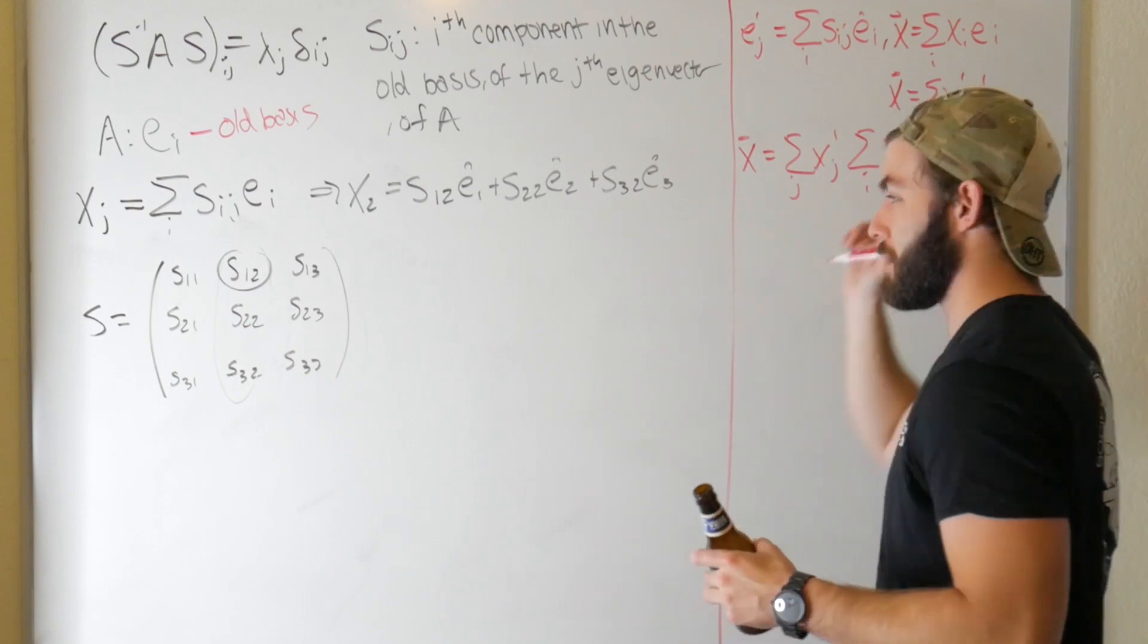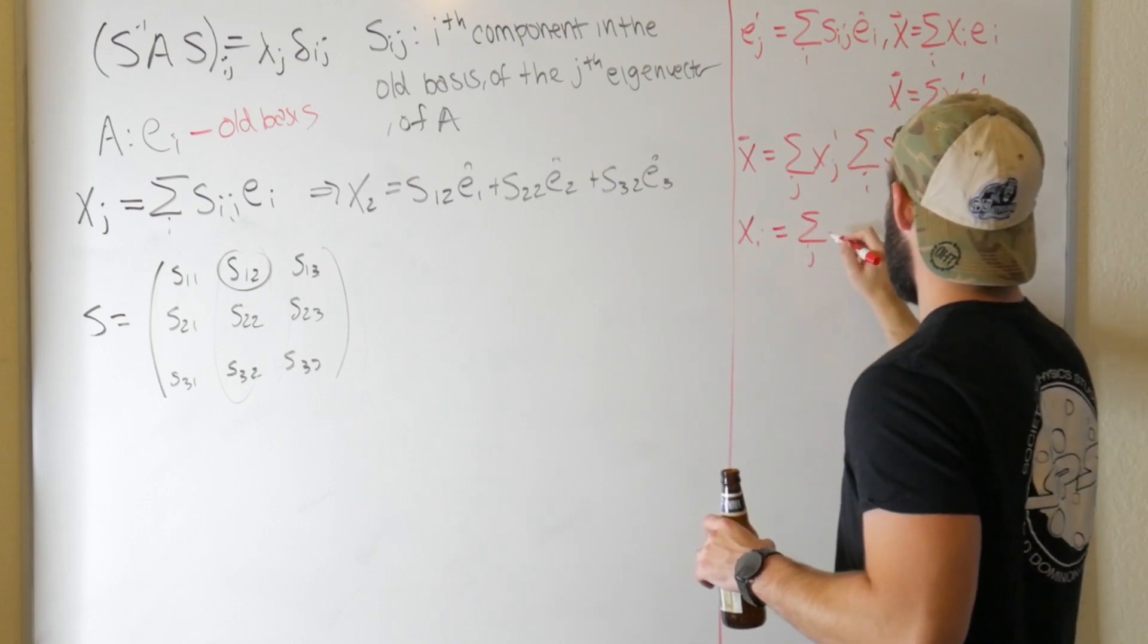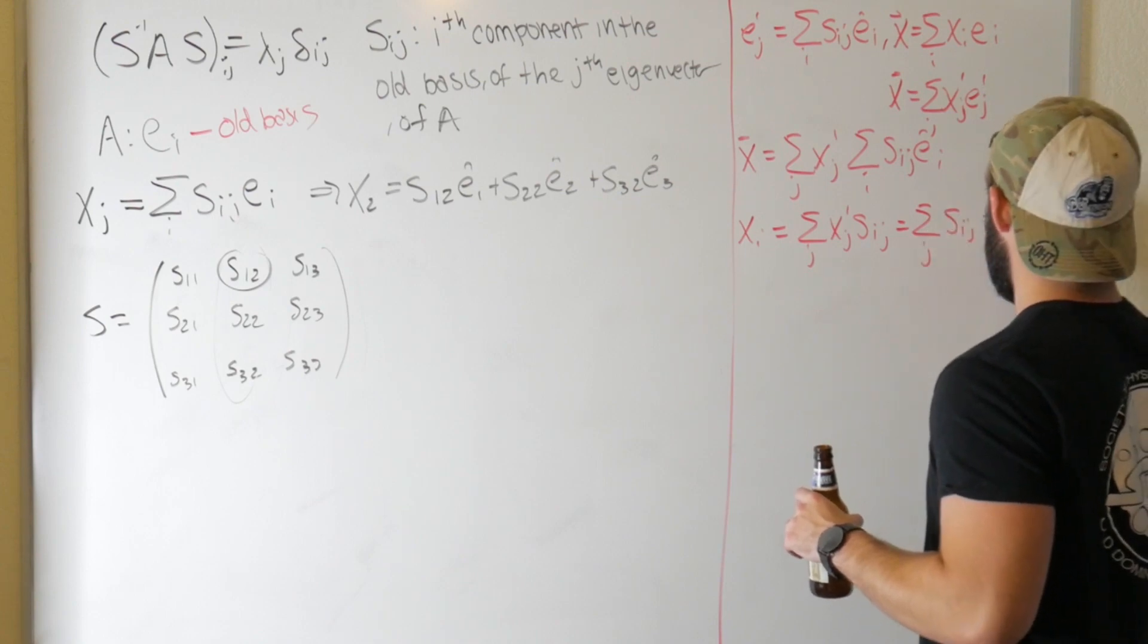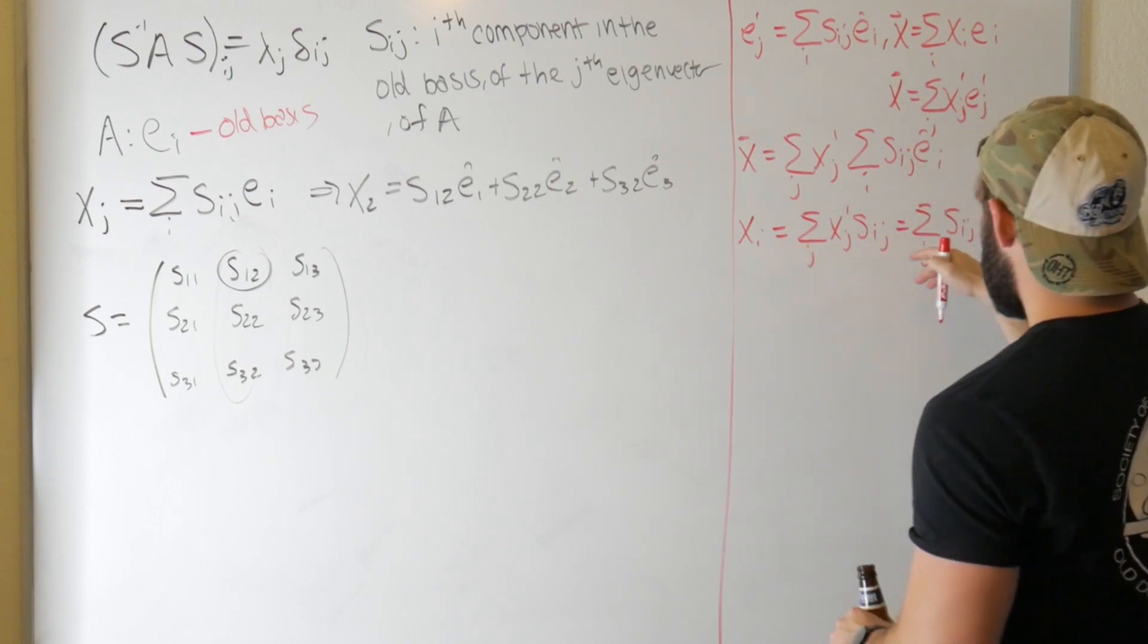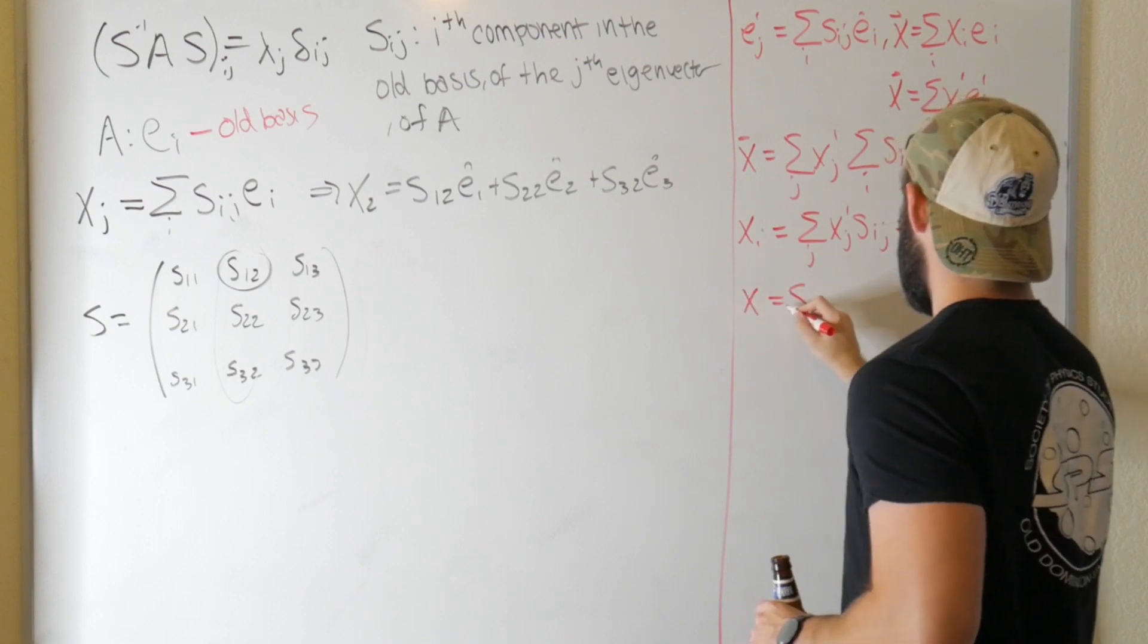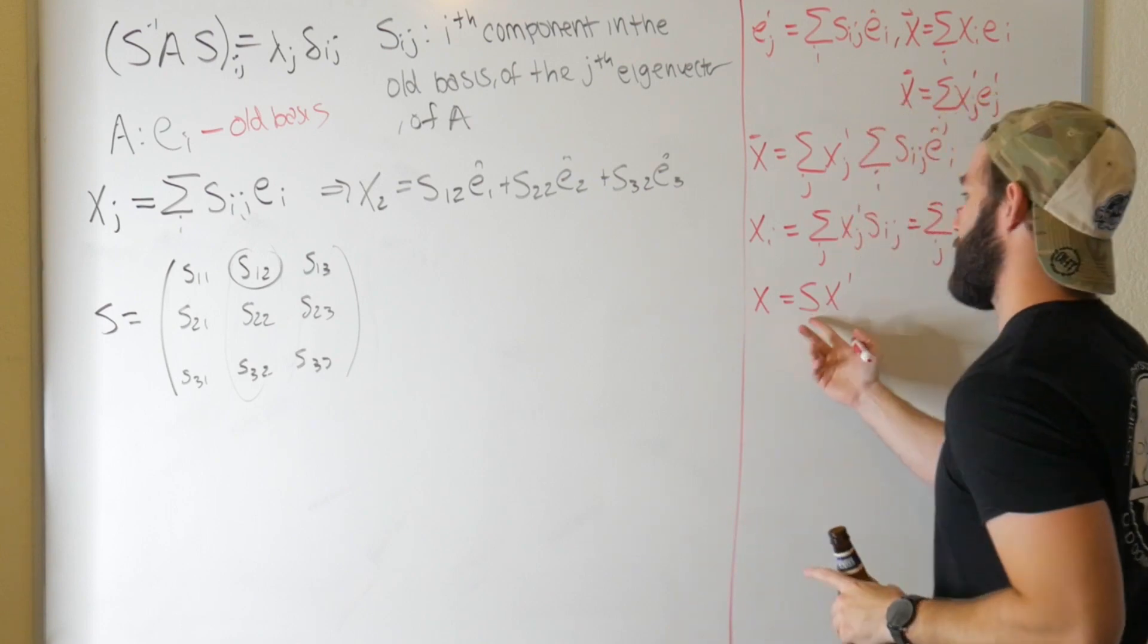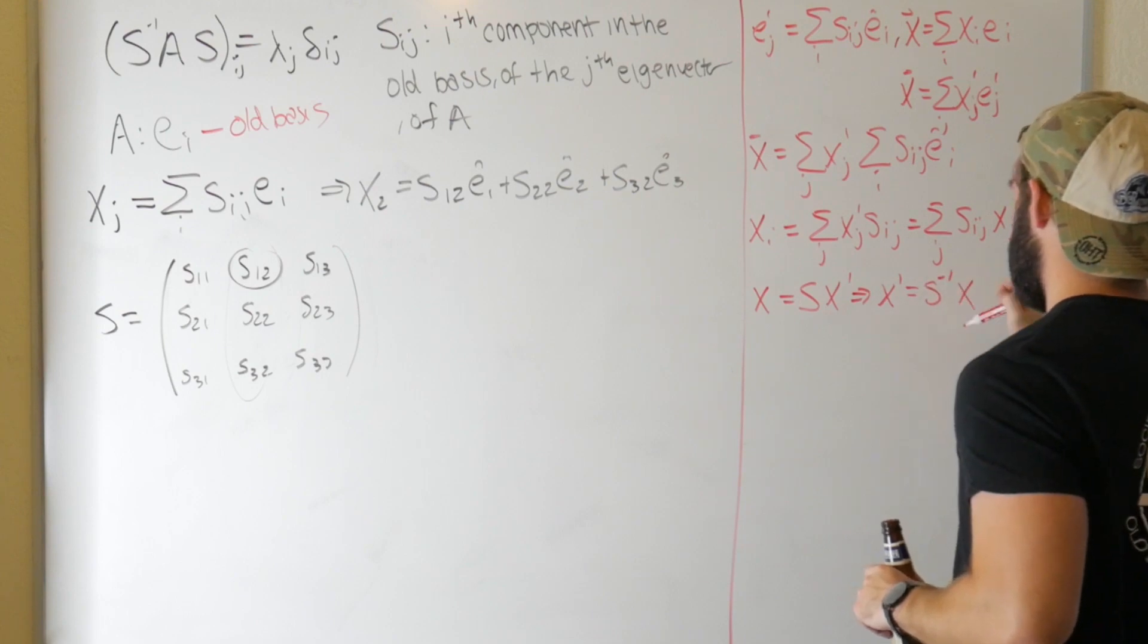Well then we're not summing over i anymore because we want one specific one. So we could say that xi is equal to the sum over j of xj prime Sij. In other words, sum over j Sij and then xj prime. Well since these are the components, we can write this in a matrix form by saying that x is equal to S matrix acting on x prime. Assuming all of the necessary assumptions, like S is invertible and stuff, then we can write that x prime is equal to S inverse on x.